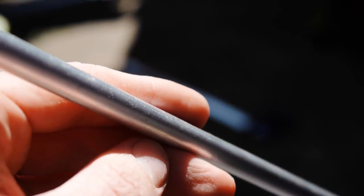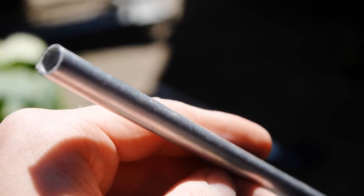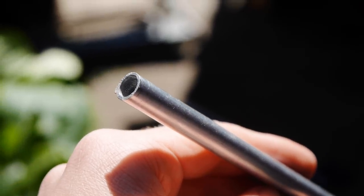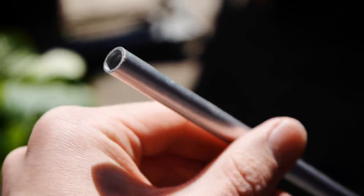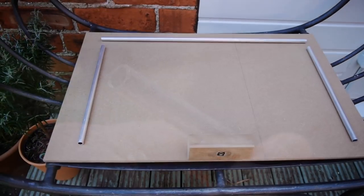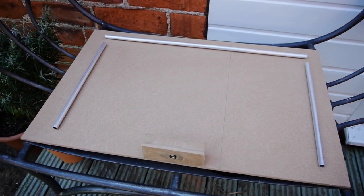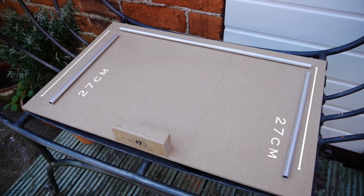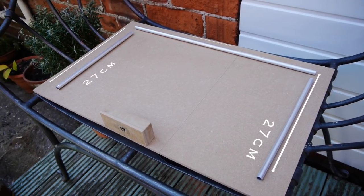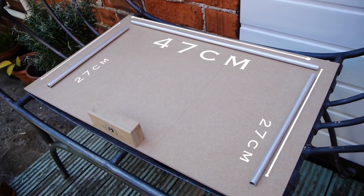Now it's time to work on the handles. I used aluminium tubes for this as I had a few lying around, but wooden dowels should work just as well. Cut down your aluminium tubes or dowel to make two lengths measuring 27cm long and one length measuring 47cm long.